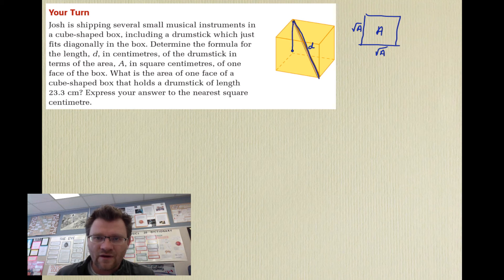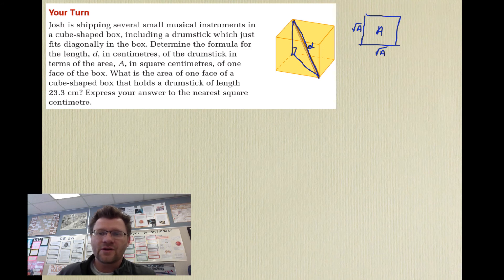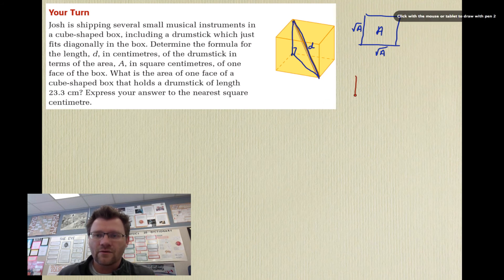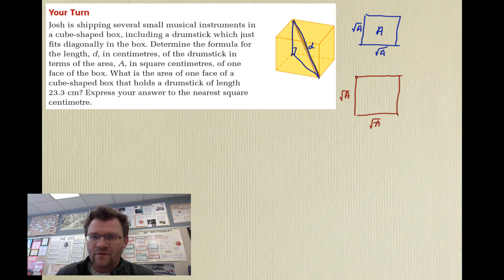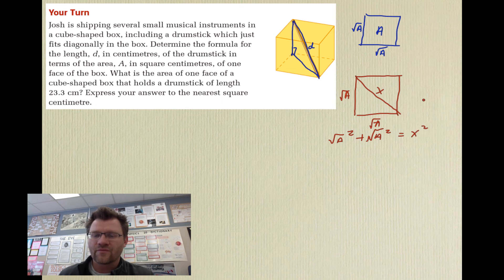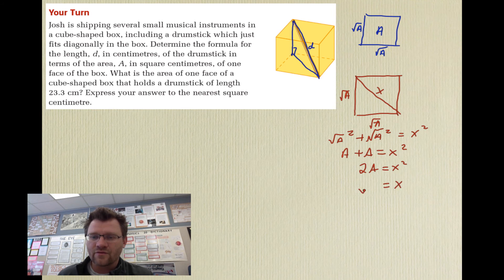We draw a right triangle for the diagonal across the bottom face: two sides are each root A, and the hypotenuse is the face diagonal x. Using the Pythagorean theorem: root A squared plus root A squared equals x squared, giving A + A = x squared, so 2A = x squared, meaning x equals root (2A). So the diagonal across the face is root (2A).